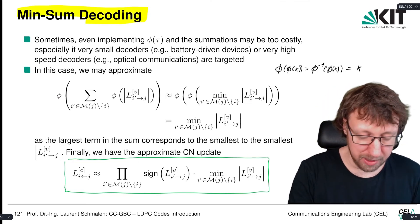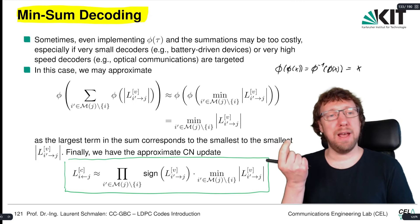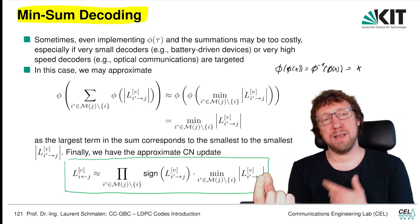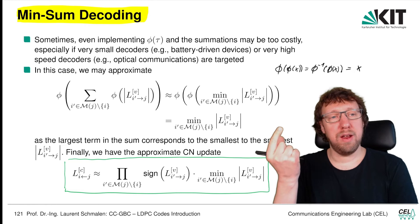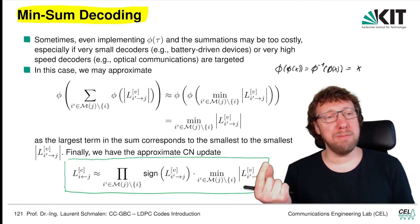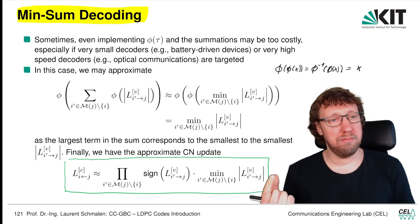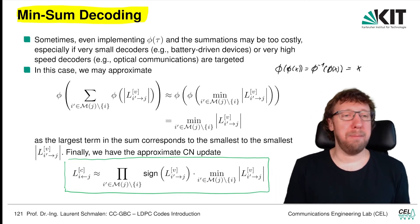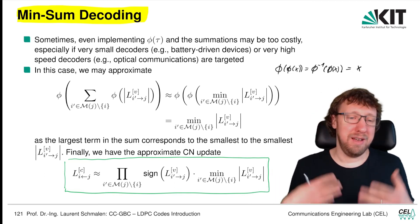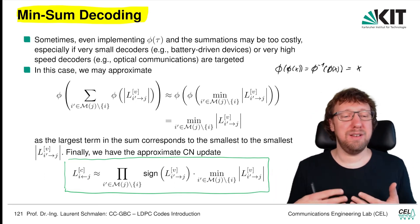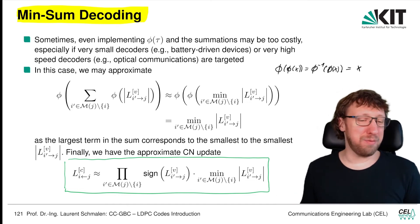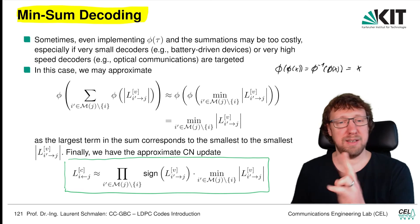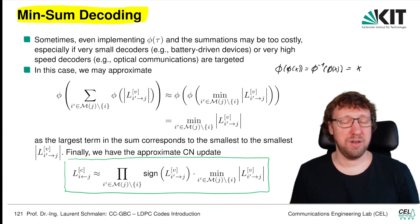This is what we call the min-sum decoder. Before we had the sum-product decoder; we have replaced the product operation by the minimum operation, so now we call it the min-sum decoder — and not sum-min, because min-sum is easier to pronounce. That's the only reason why the terms are in that order.